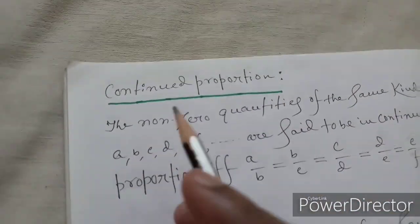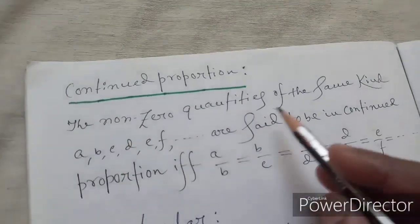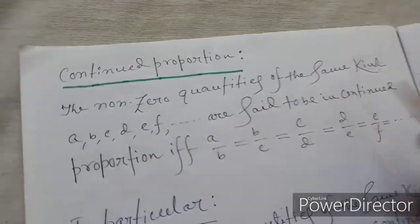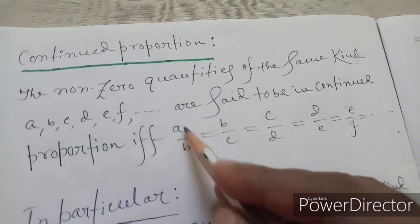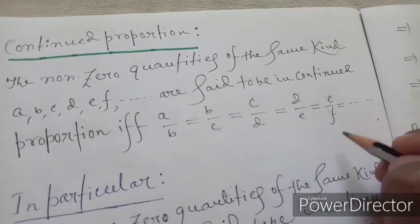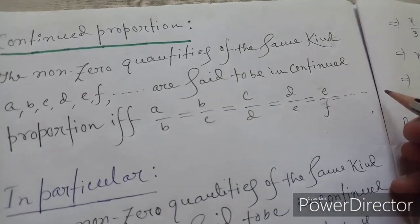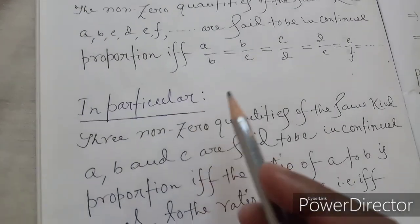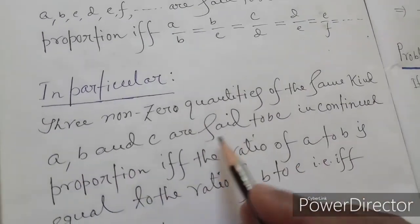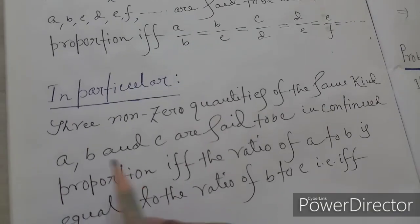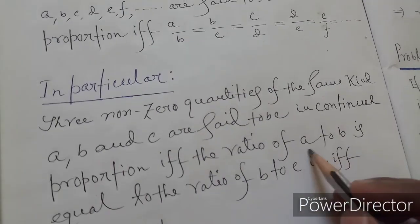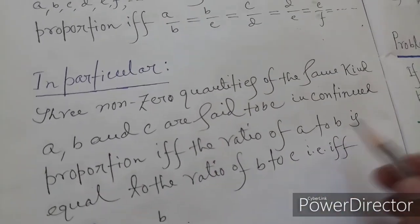The definition of continued proportion: non-zero quantities a, b, c, d, e, f... are said to be in continued proportion if and only if a/b = b/c = c/d = d/e = e/f = ... In particular, three quantities a, b, c are in continued proportion if a : b = b : c, i.e., a/b = b/c.